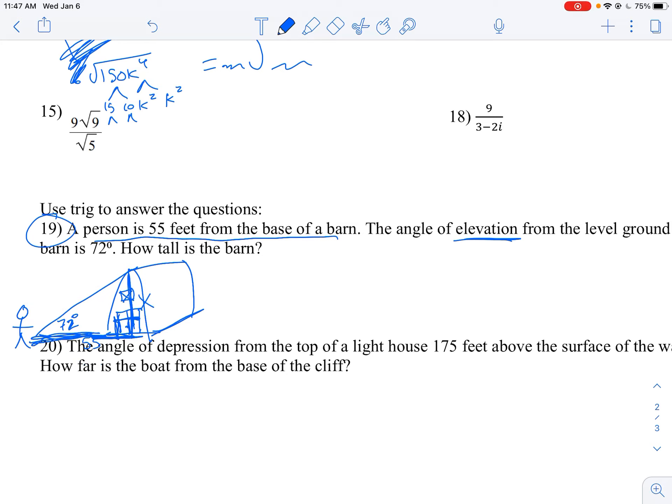Well, we have an angle and we have a side that's adjacent to the angle, and we want the side that's opposite. And so that's going to be tangent of those 72 degrees is going to be the opposite side over the adjacent side. And this is your setup equation. You can solve for x pretty quickly by times by 55 and finishing out your problem.